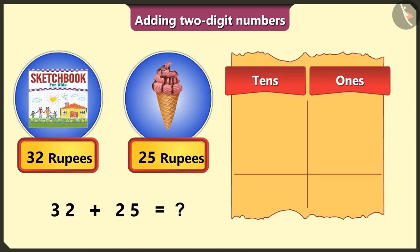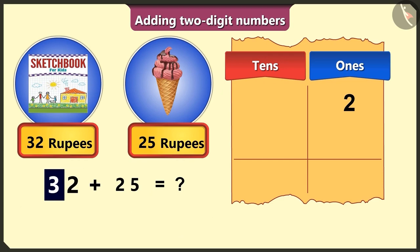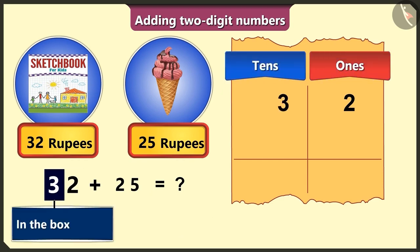First of all, from thirty-two, write three in the ones box and two in the tens box. You did the opposite, Bilu. In a two-digit number, the last digit is always written in the ones box and the first digit in the tens box.